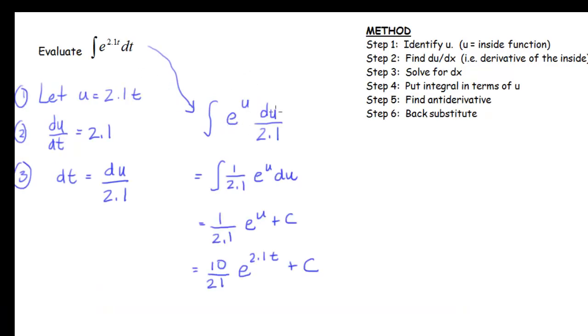Hopefully you got e^u du/2.1. Antiderivative of that - I took this 2.1 in the denominator here and I wrote it as a fraction there. Take the antiderivative of e^u and I get e^u + C. I want to rewrite this fraction here because in general I don't want to have any negative numbers in the denominator, I don't want to have any fractions in the denominator, and I don't want to have any decimals in the denominator.